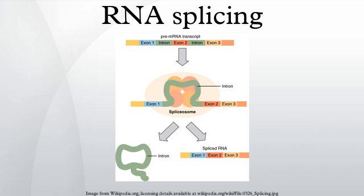Point mutations in the underlying DNA or errors during transcription can activate a cryptic splice site in part of the transcript that usually is not spliced. This results in a mature messenger RNA with a missing section of an exon. In this way, a point mutation, which usually only affects a single amino acid, can manifest as a deletion in the final protein.